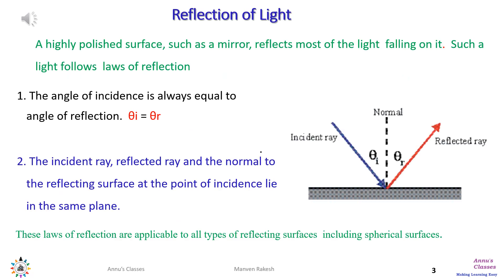A polished surface like a mirror will reflect the light falling on it. These light rays follow the laws of reflection. First, the angle of incidence is always equal to the angle of reflection.